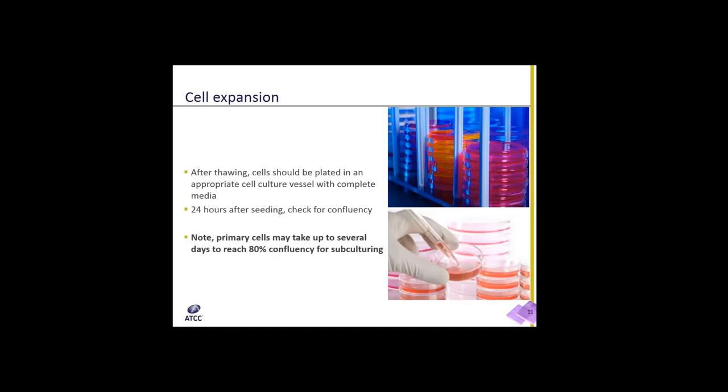After thawing cells, you're now ready to plate the cell in an appropriate vessel, which could be a cell culture dish or a flask. This all depends on your specific needs. For most cell types, the general accepted practice is to allow them to settle for about 24 hours after seeding. At this point, the cells should be checked for confluency, which is the percent coverage of cells over the surface of the vessel. If expanding cells, the ideal time to subculture is at 80% confluency. The time it takes to reach this level is going to vary upon cell types. Primary cells may take several days or even up to a couple of weeks to get to that point.